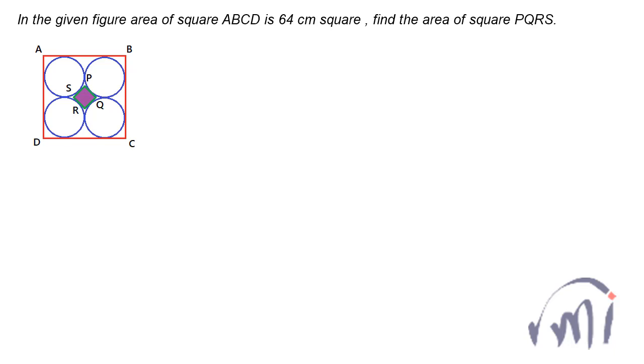Hi, so here we have a problem which was sent by Zaheen. In this we have a square ABCD whose area is 64 cm square and we have four circles inside that square.